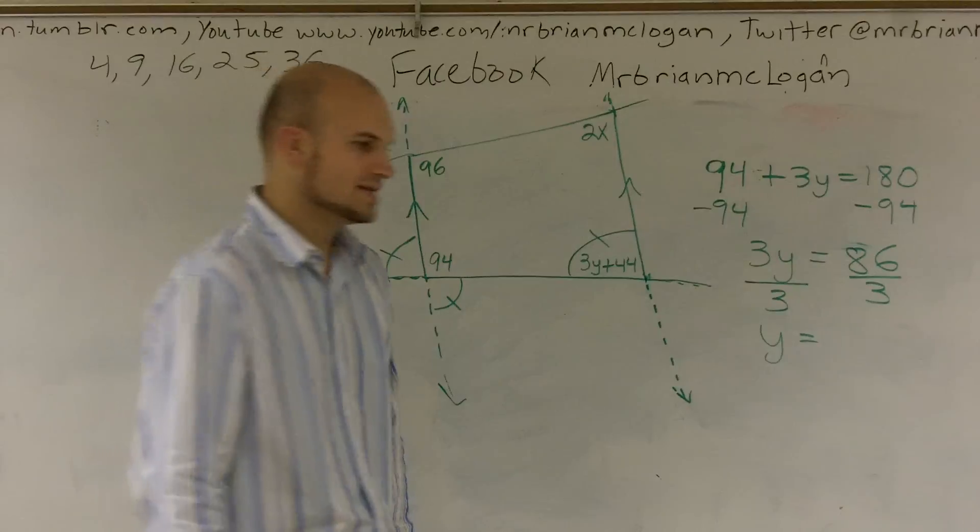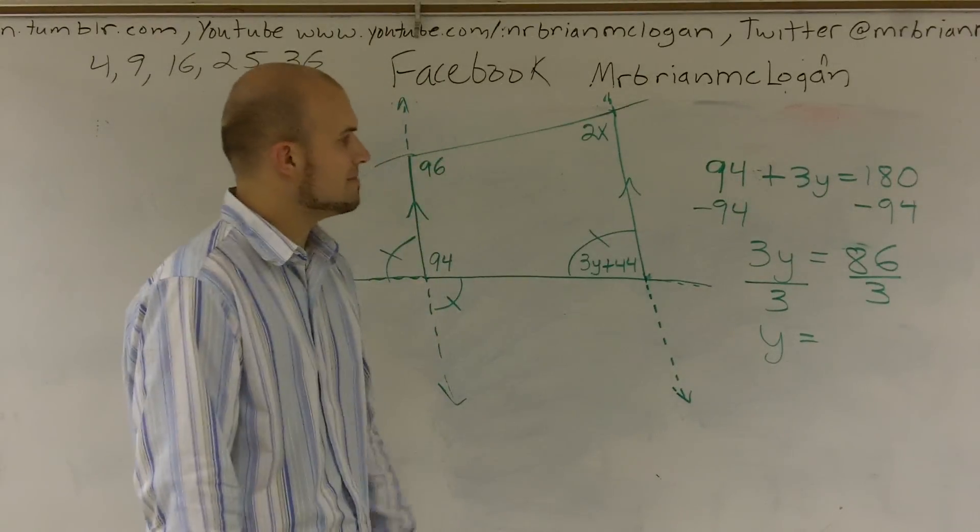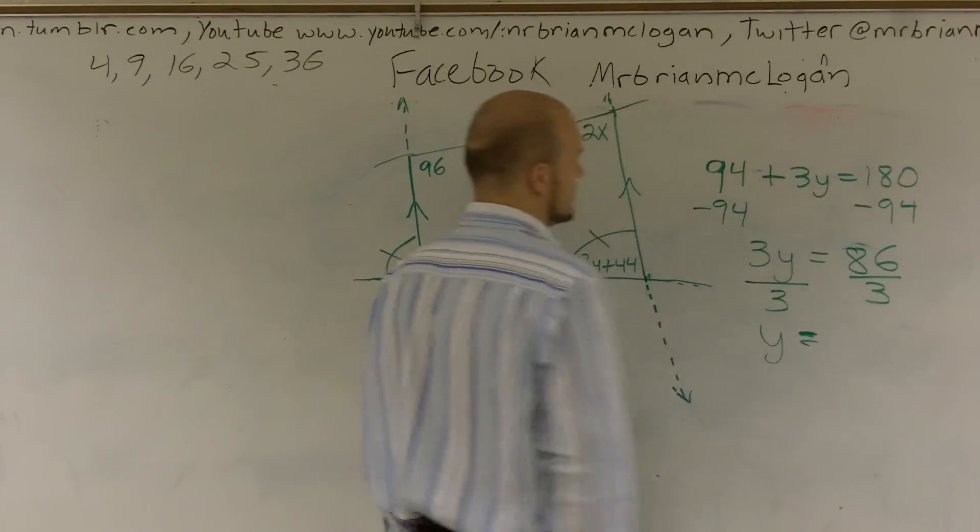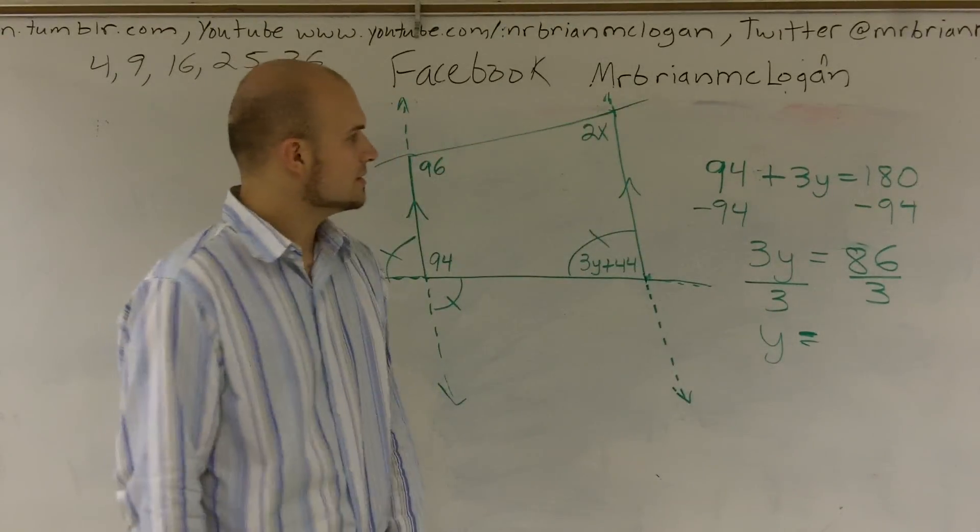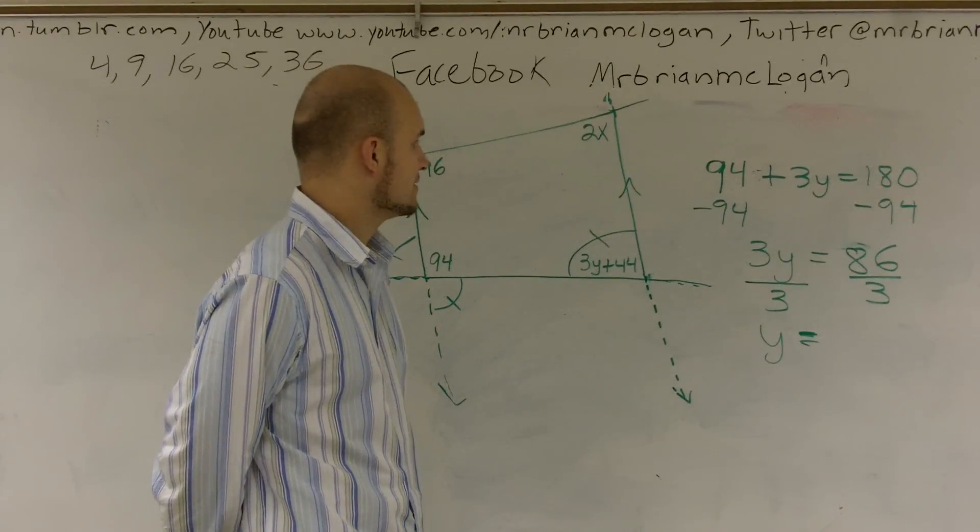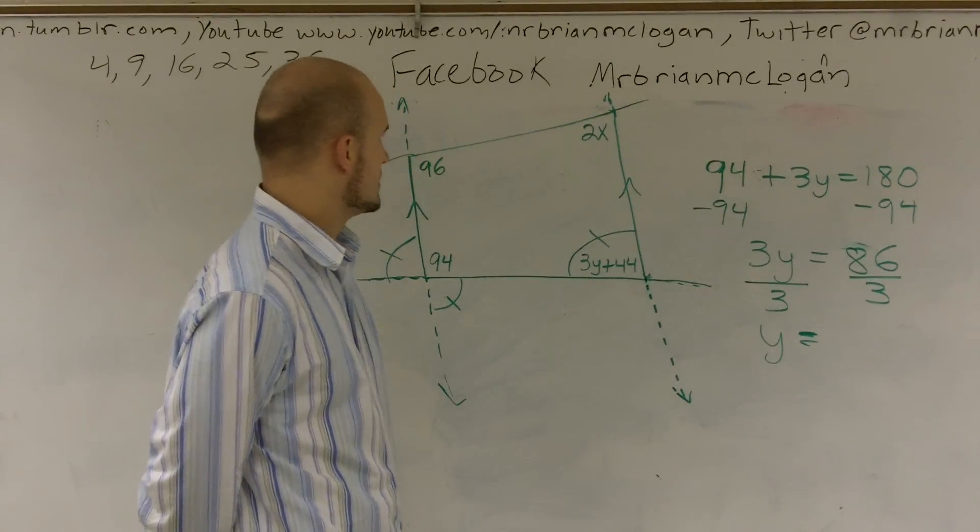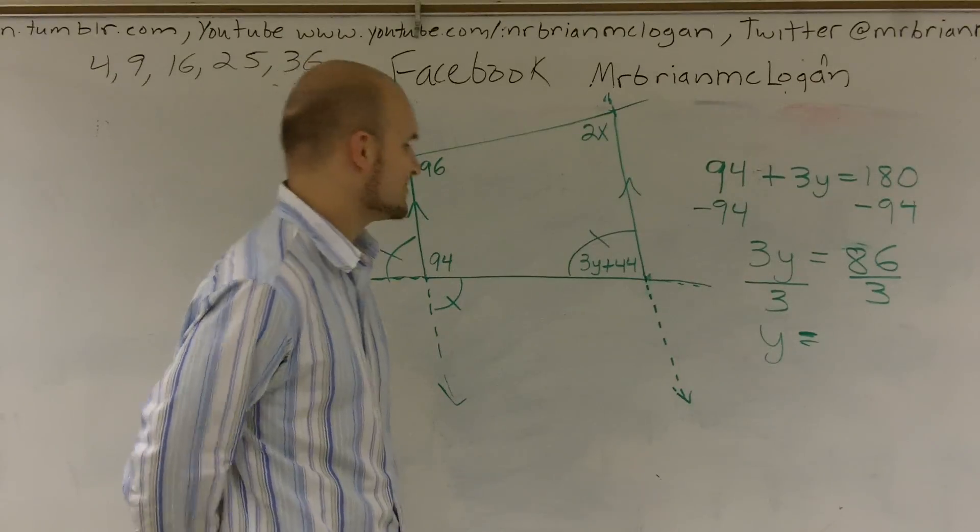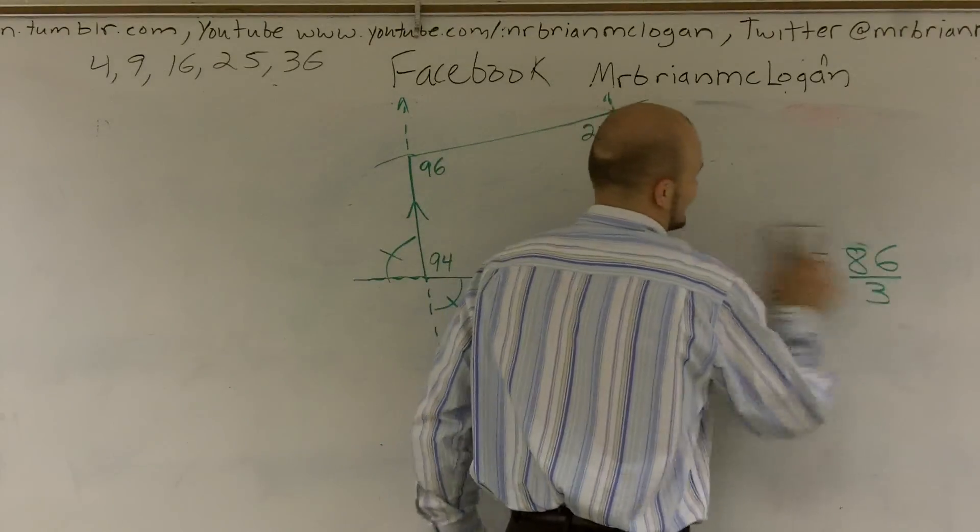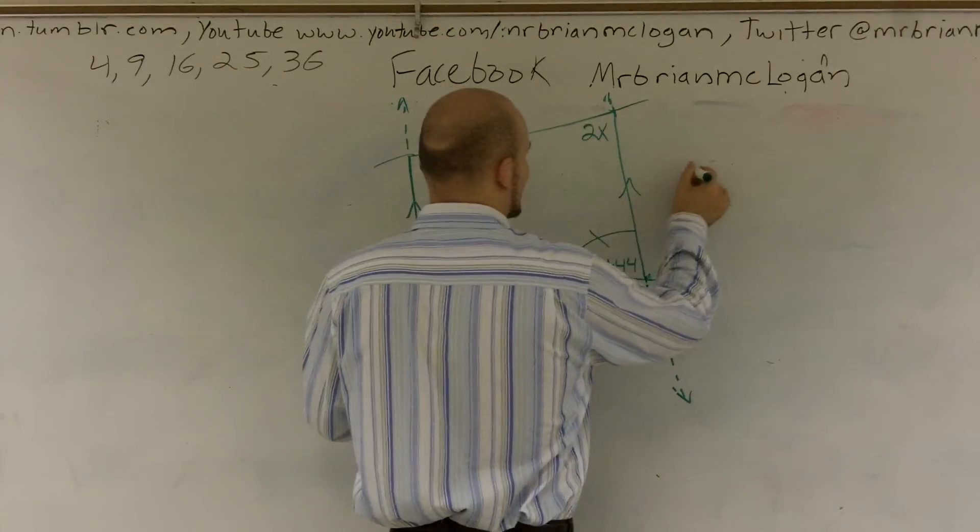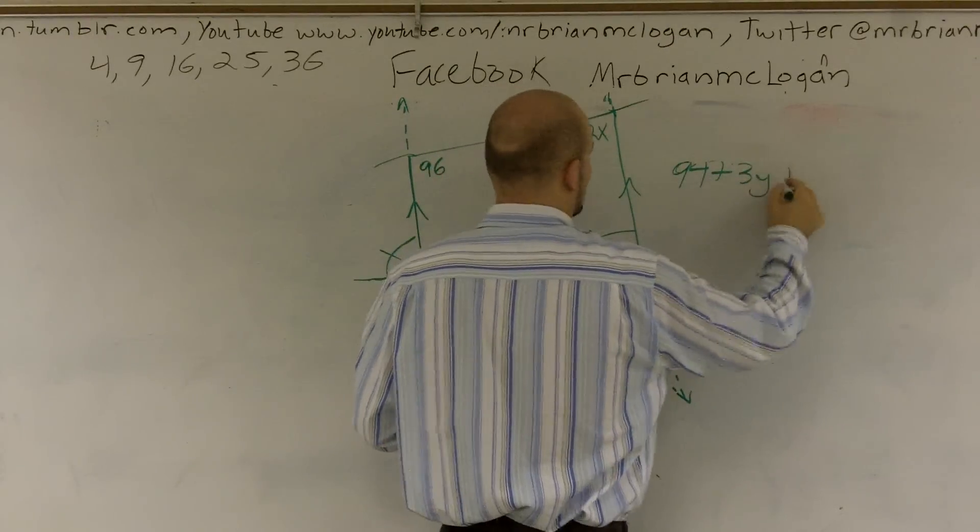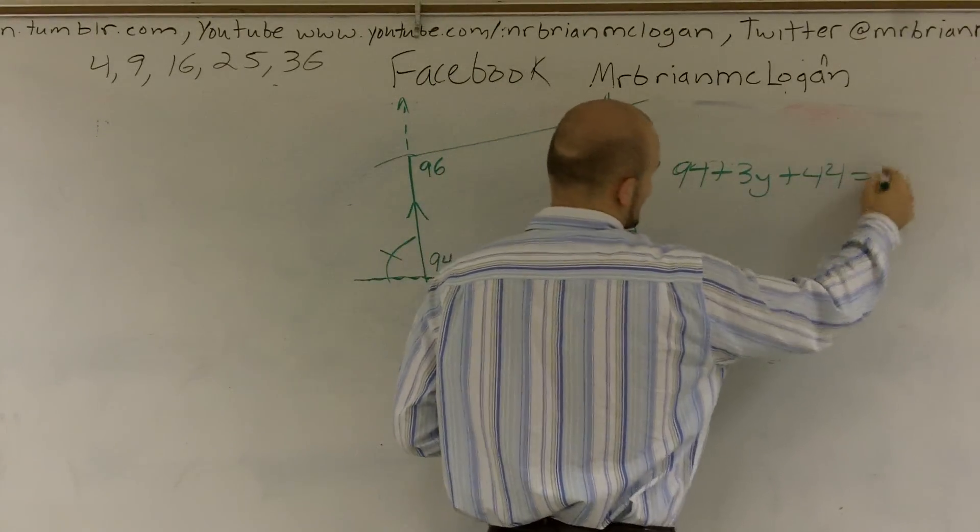It says 94 plus 3y plus 44 equals 180. We all make mistakes, don't we? Sorry about that. Here I can combine my like terms. This would be 138 plus 3y equals 180.